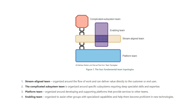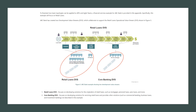To illustrate how we can apply team topologies to ARTs and teams, we are going to take XYZ Bank, which has services like retail loans and core banking. XYZ Bank has created two development value streams that collaborate to support the retail loans operational value stream. In this video we are going to talk about the core banking development value stream, which focuses on developing solutions for servicing retail loans.